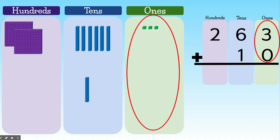Okay. When we're adding three-digit numbers, we always start, start, start on the right in our ones place. So we're going to add three plus zero equals three.